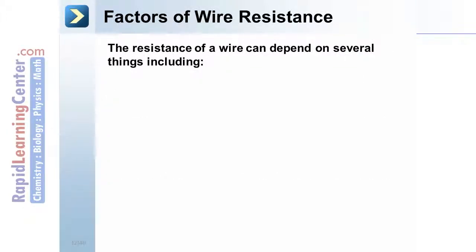Factors of wire resistance. The resistance of a wire can depend on several things, including thickness or cross-sectional area of a wire. A very thin wire has to have all those electrons crowd through a tiny cross-sectional area. So a thin wire has a higher resistance, where a thick wire has a lower resistance.